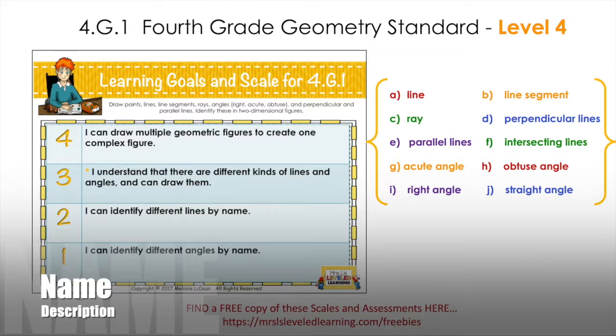The ray and the intersecting lines they would draw in green. Perpendicular lines and straight angles would be drawn in blue. Parallel lines and right angles would be drawn in purple. You could use this as a small group activity, a mini guided lesson, or an independent activity for your really high students. I always make sure that they've mastered the level three grade level standard first.